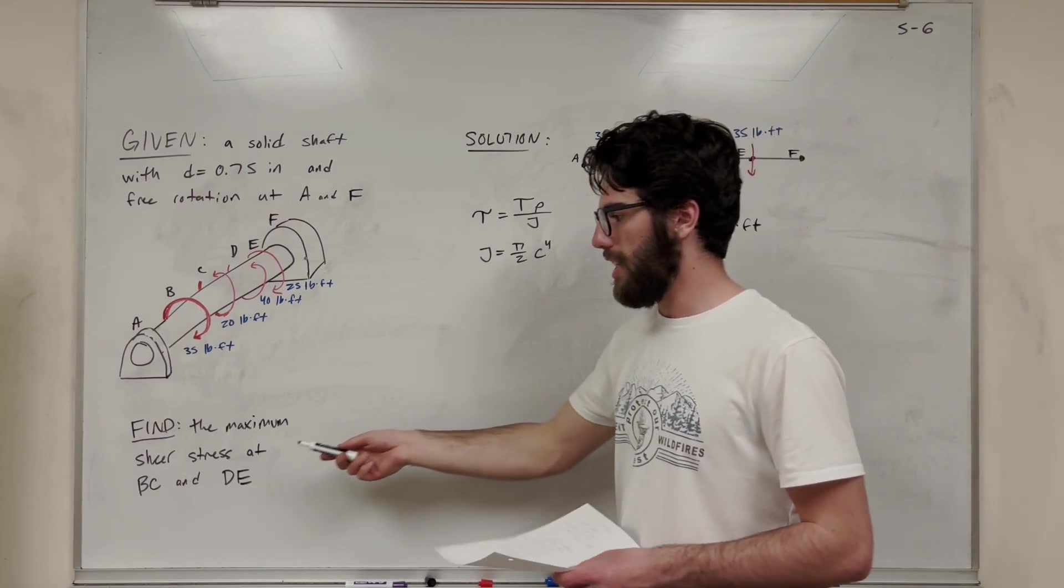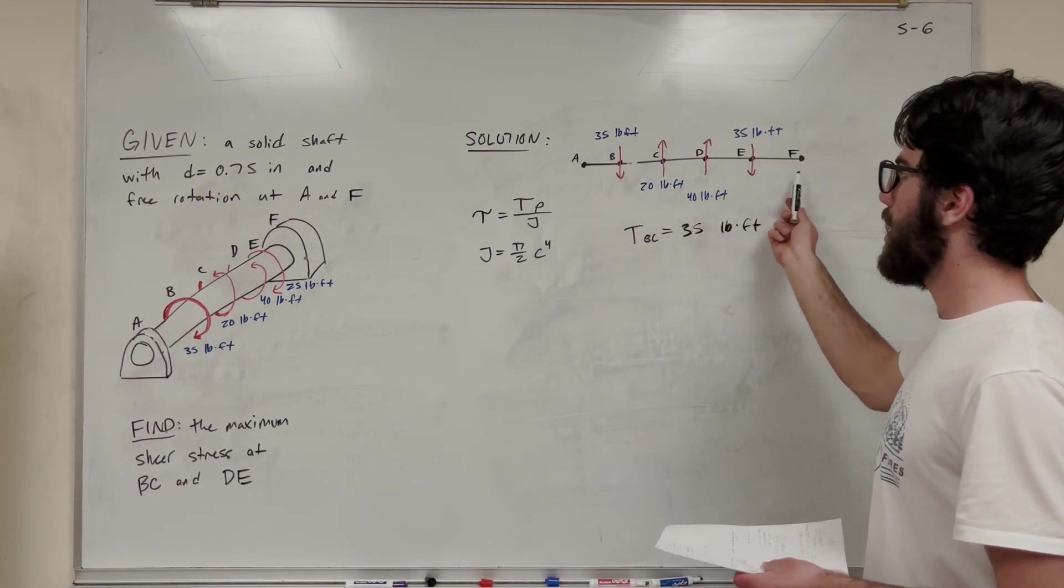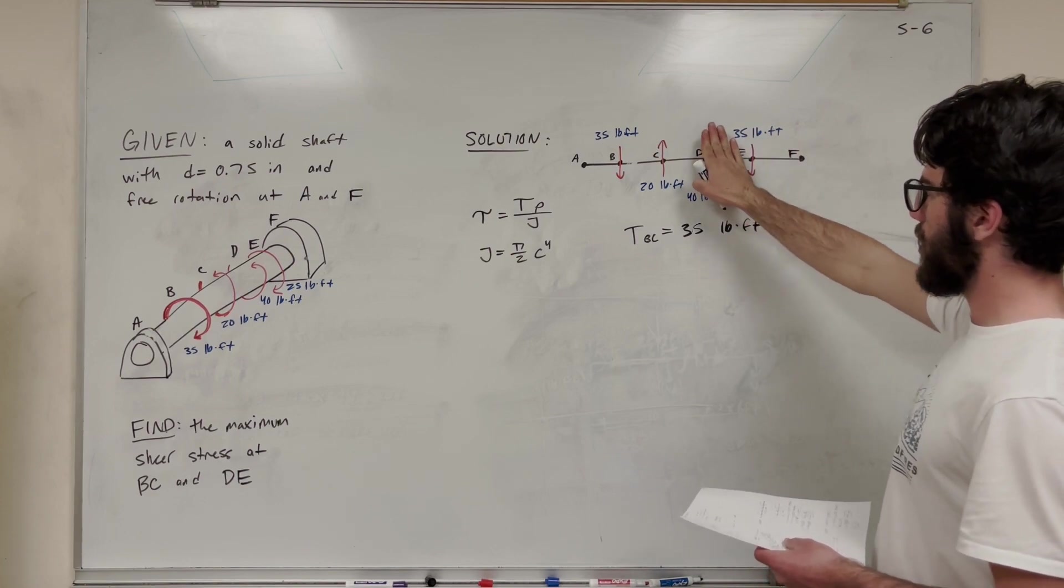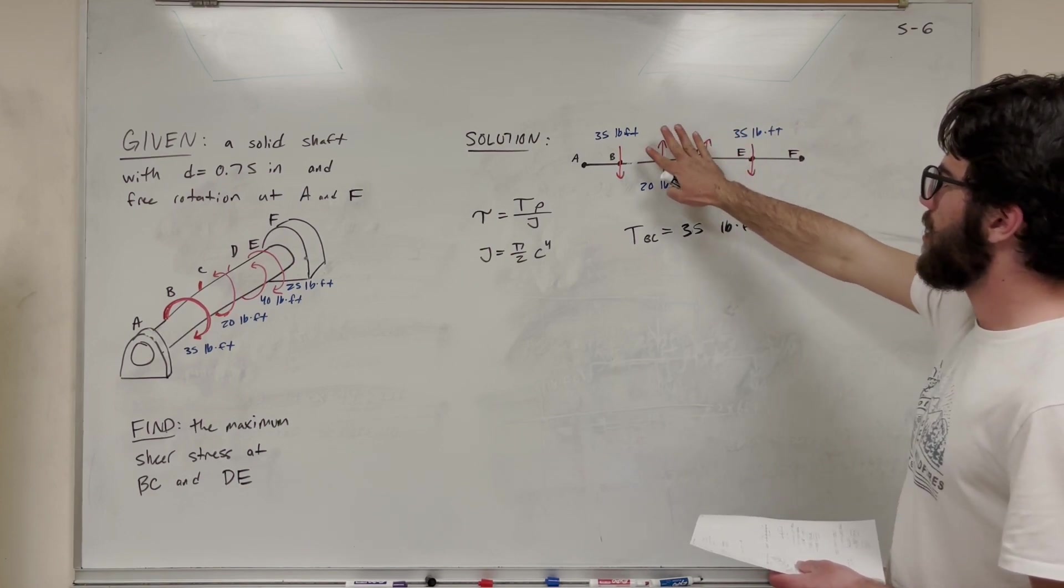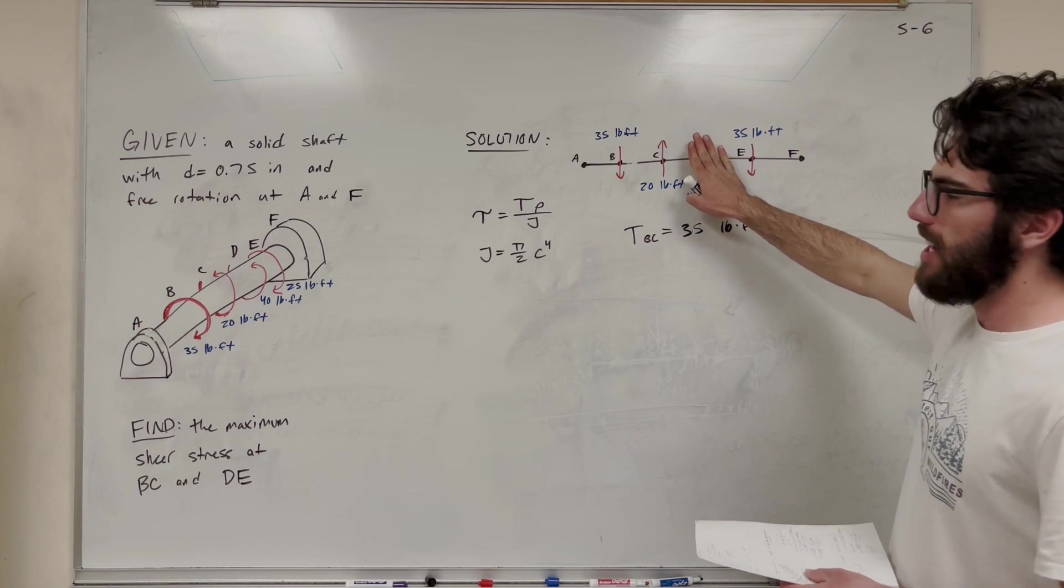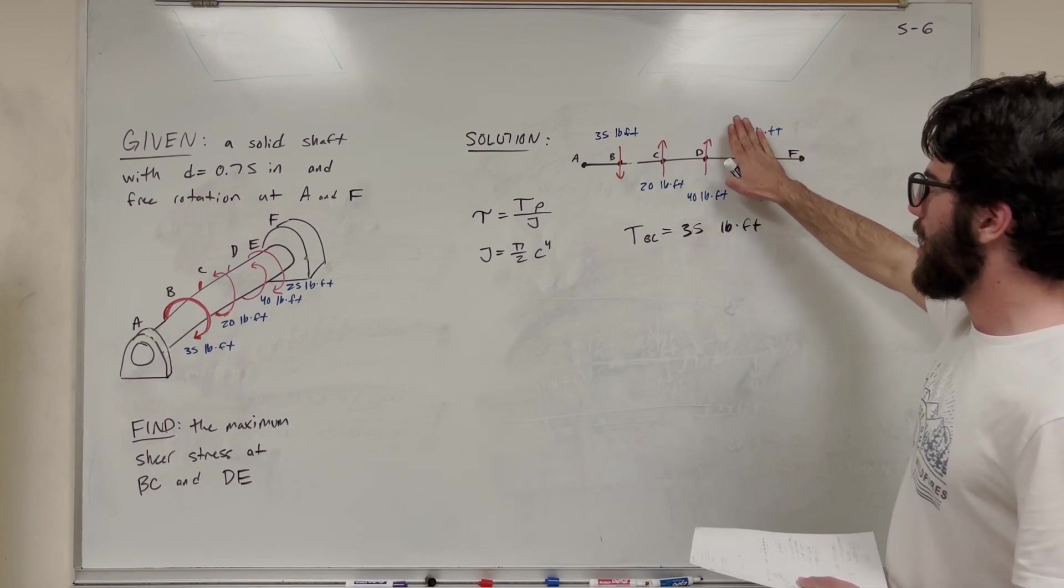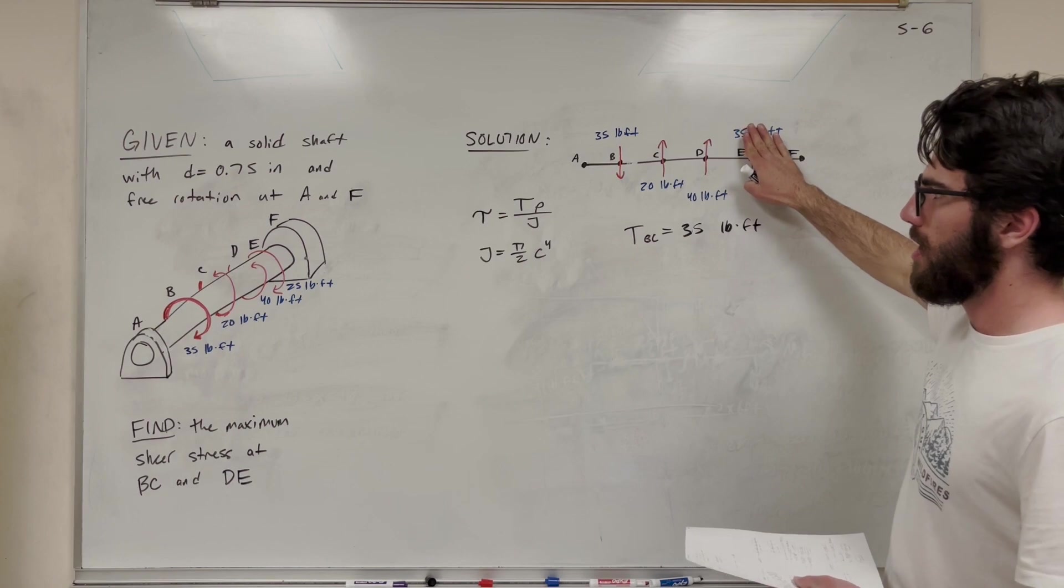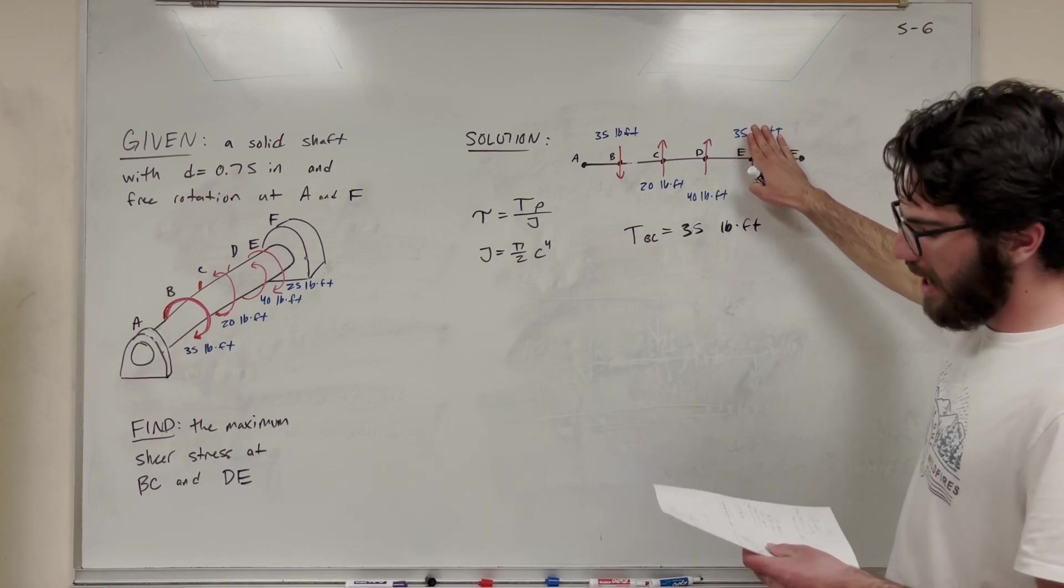So then if we want to go to DE, we can either keep going down the line or we can start at the other end. So let's keep going down the line. So looking at CD first of all, 35 but then minus 20, so we're at 15. Now we go to DE, we got 35 minus 20 minus 40. It's going to be negative 25.